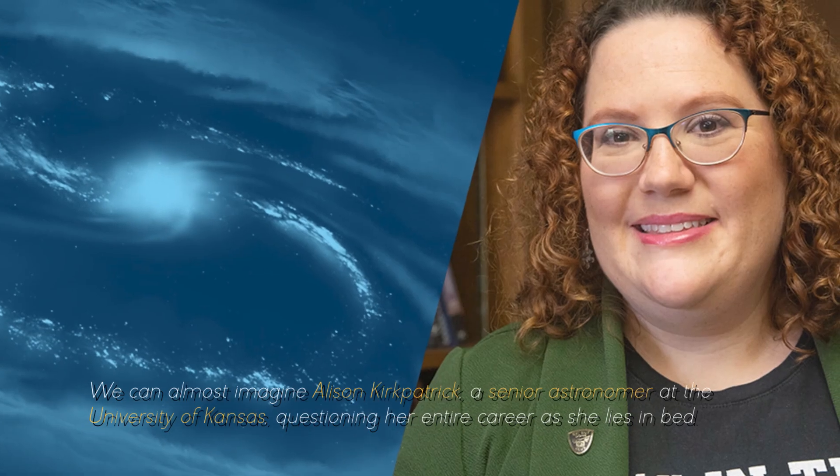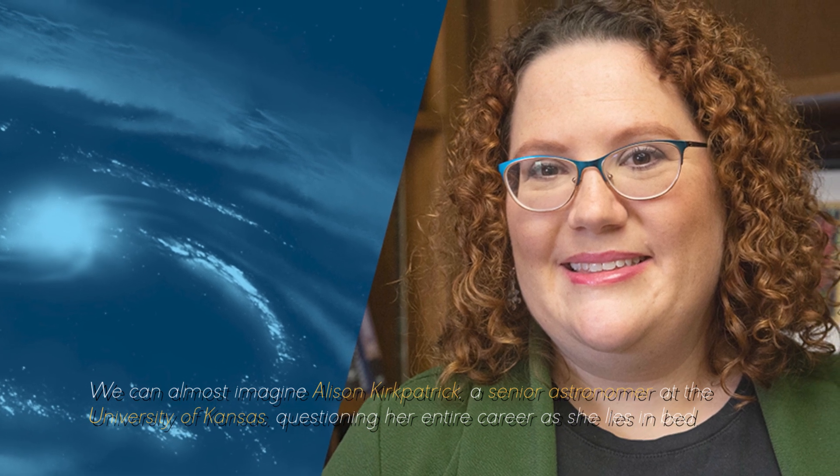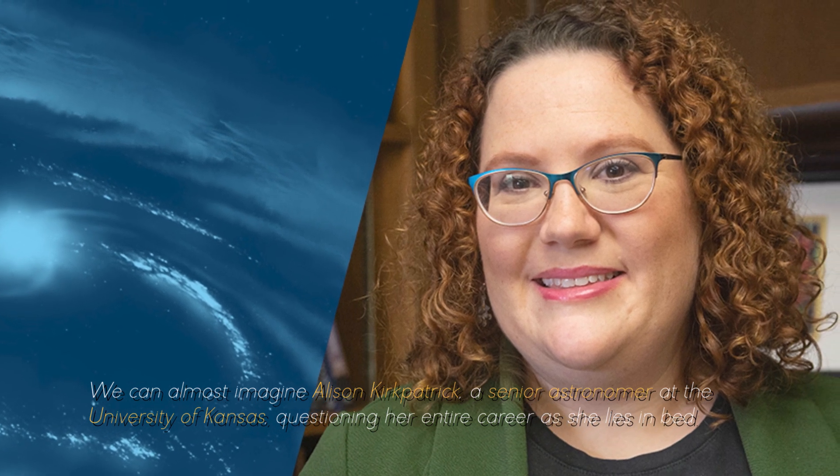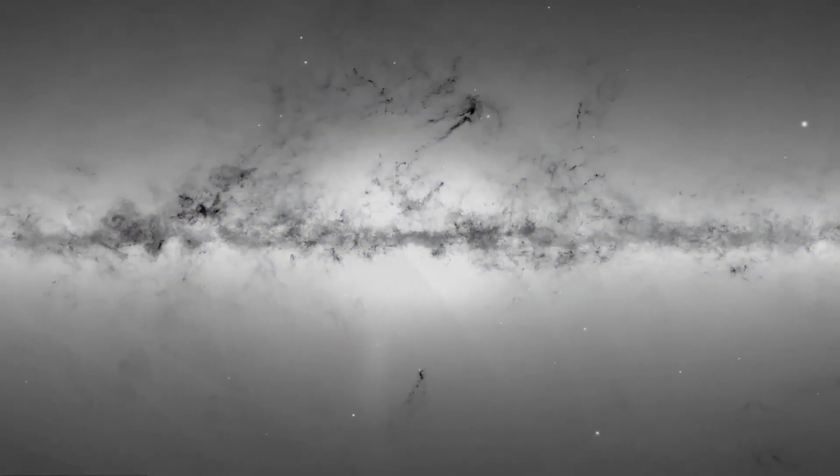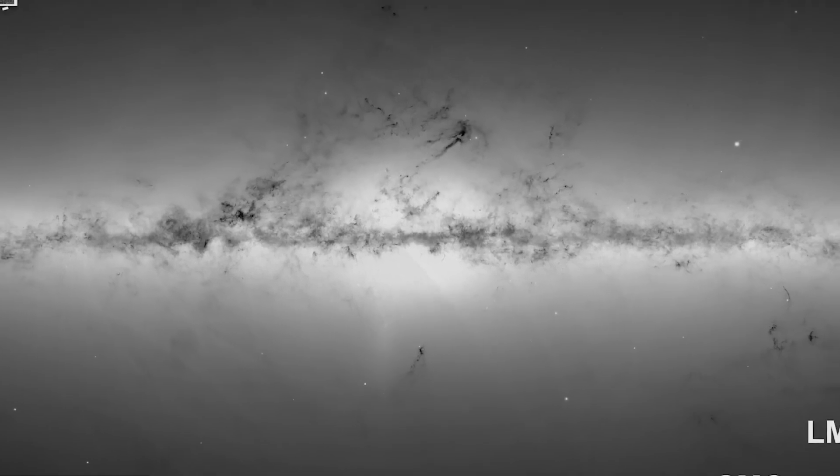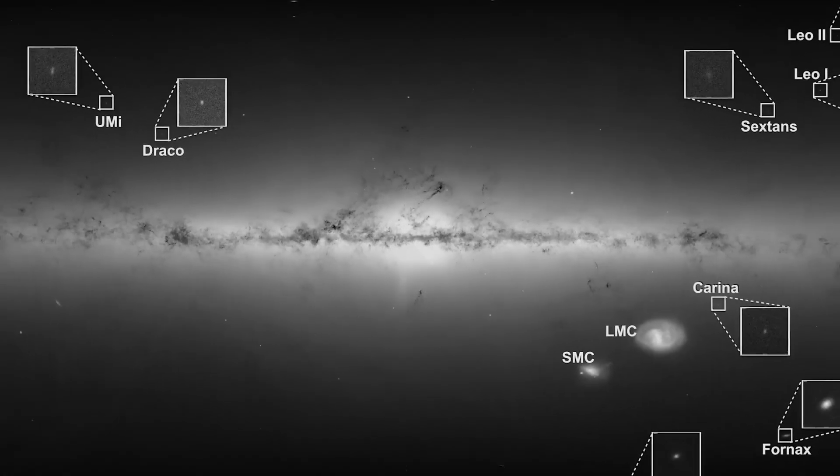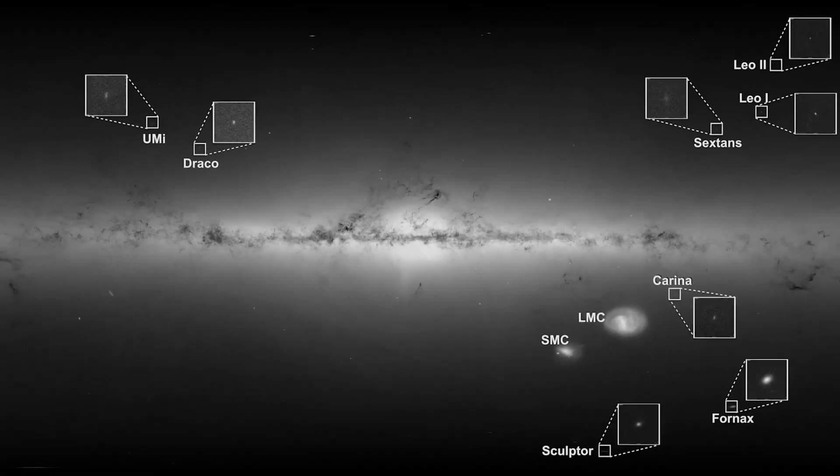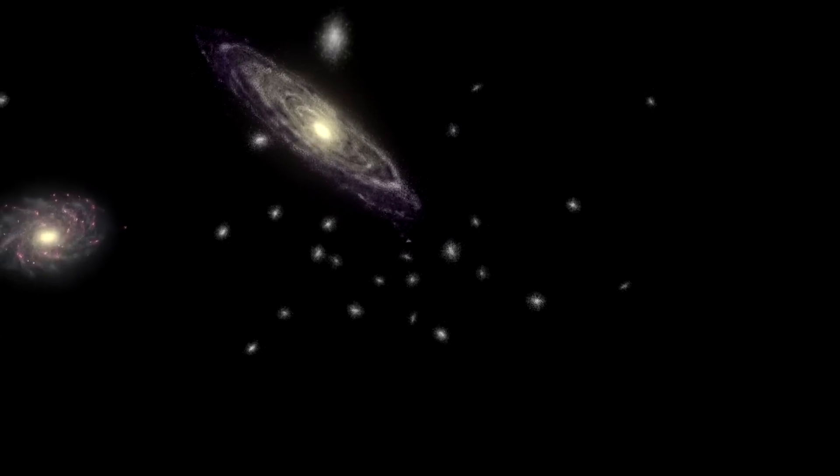We can almost imagine Alison Kickpatrick, a senior astronomer at the University of Kansas, questioning her entire career as she lies in bed. Why so much surprise? The reason for this bewilderment lies in the fact that galaxies captured by the James Webb do not behave according to what the Big Bang hypothesis would predict. They are too small, excessively uniform, and appear to be on an edge incompatible with this theory.